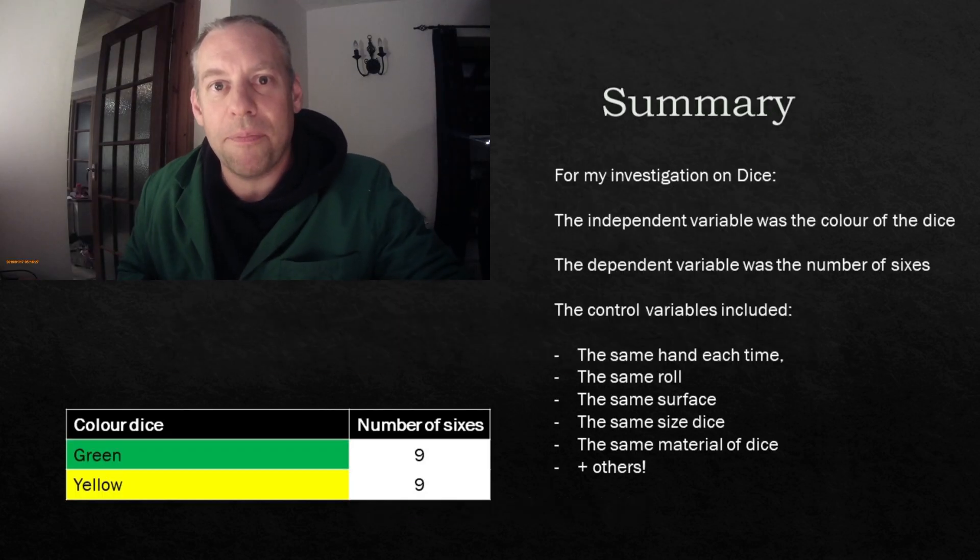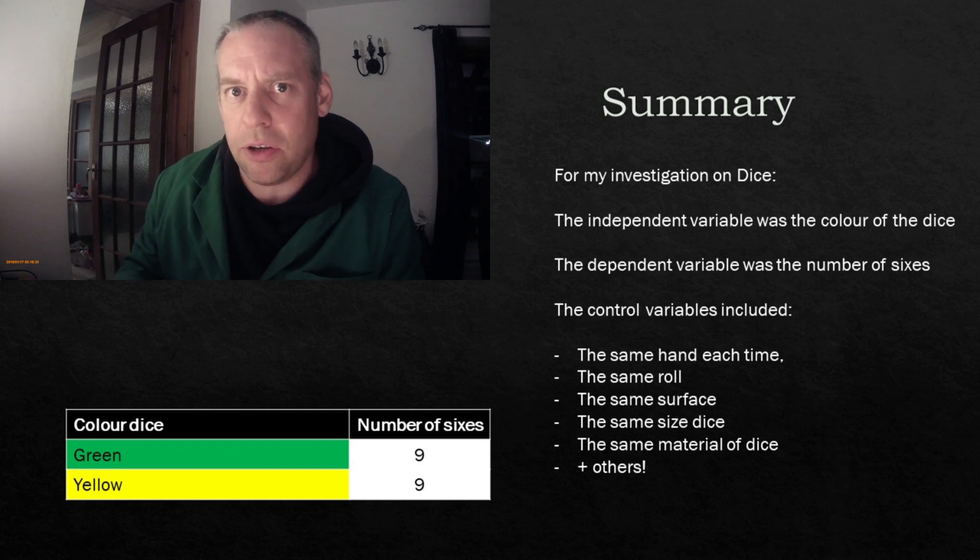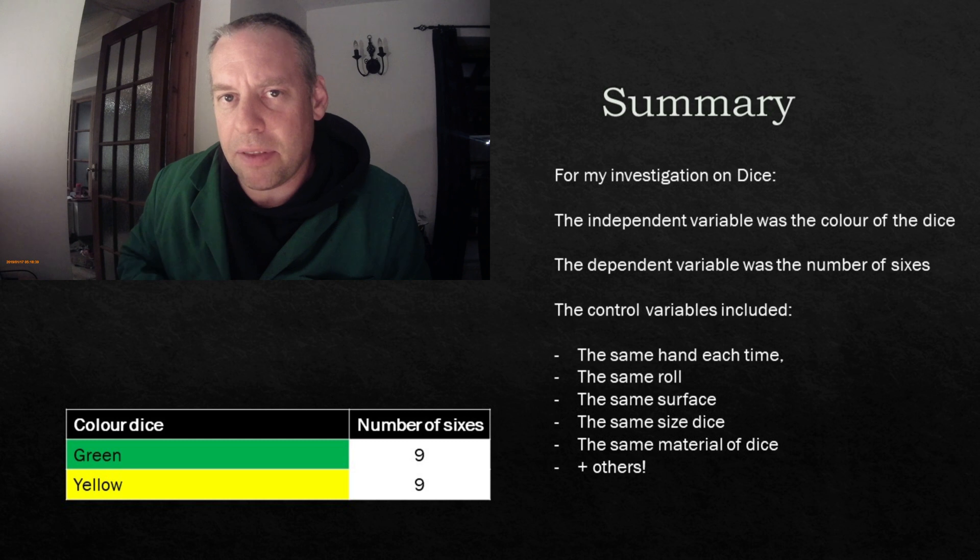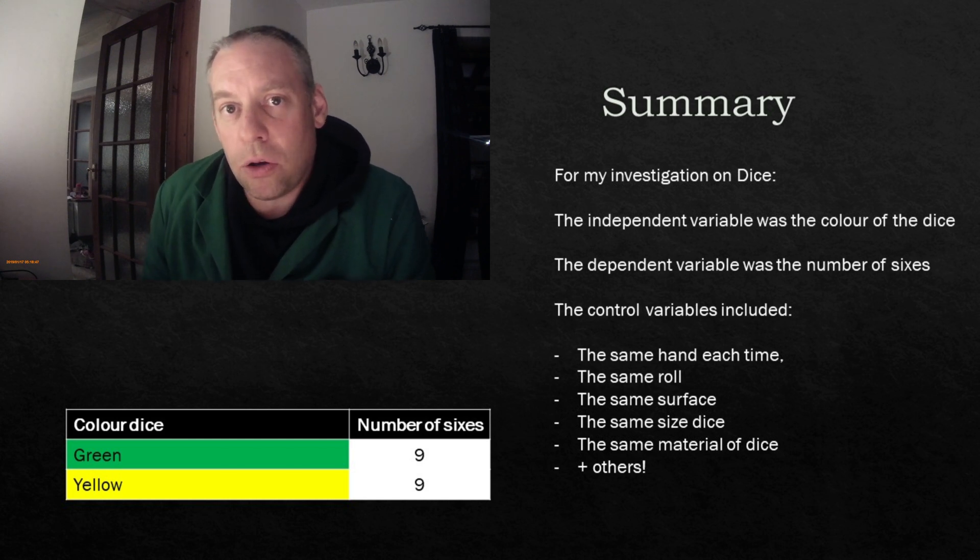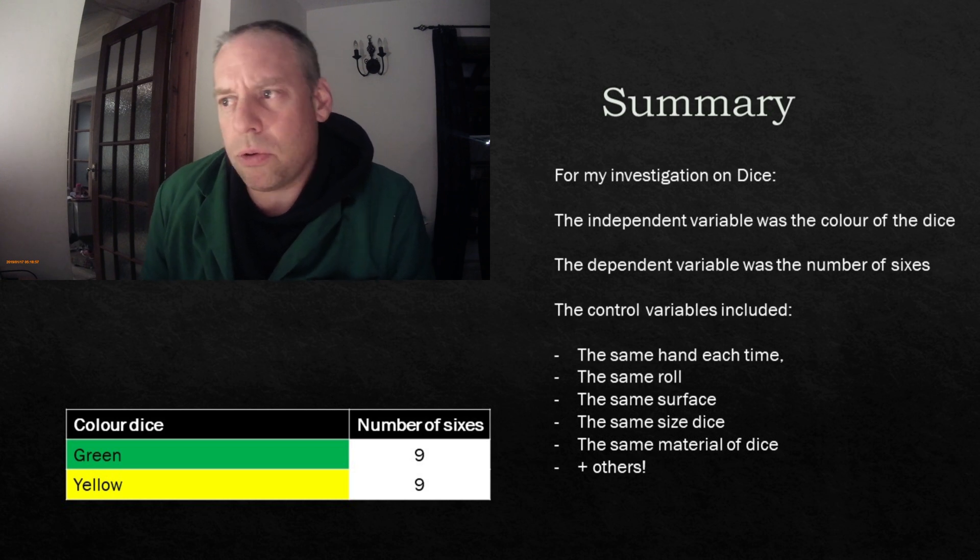Great. So the results are in. Now, hopefully you can see them on the screen. We had a total of 10 rolls, and I did 4 green dice and 4 yellow dice all together. I tried to roll them the same. So that was 4 of each, 10 rolls. So that was a total of 40 rolls. Of those 40 rolls, there were 9 greens and 9 yellows. So in this particular experiment, it made no difference whatsoever. Now, people say, oh sir, your experiment failed. You didn't get a result that you were trying to prove. No, actually, in science, that's very important.